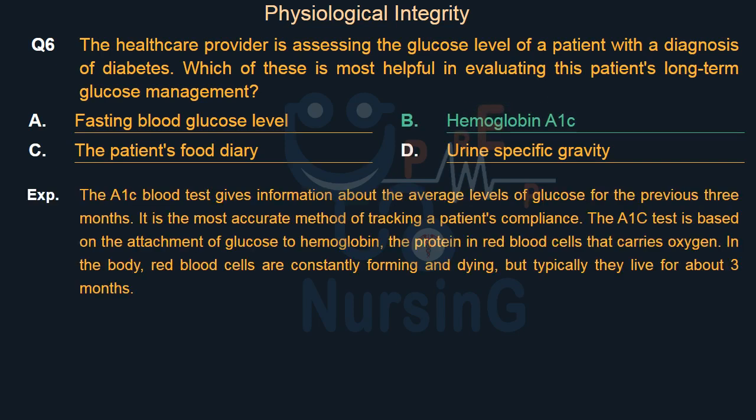The A1c blood test gives information about the average levels of glucose for the previous three months, making it the most accurate method of tracking a patient's compliance. The A1c test is based on the attachment of glucose to hemoglobin, the protein in red blood cells that carries oxygen. In the body, red blood cells are constantly forming and dying, but typically they live for about three months.